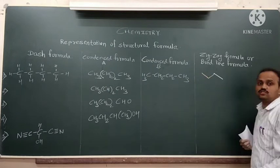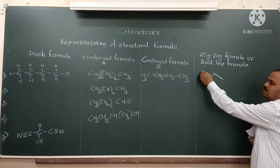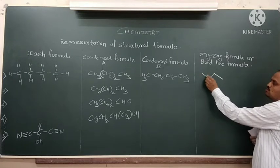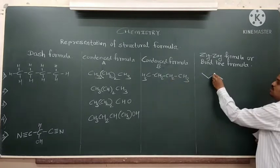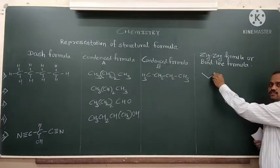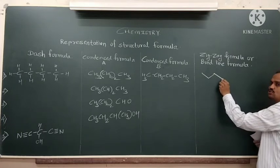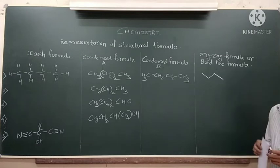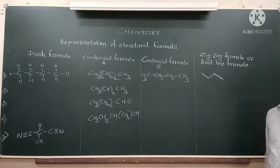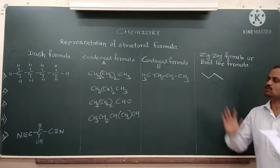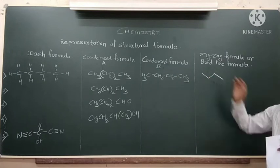One, two, three, four carbons. C, two bonds are already there. Therefore, it is CH2. C, two bonds are there. Therefore, remaining two H are there. And C, one bond is shown. Therefore, remaining are automatically three H. This is the zigzag formula or bond line formula of the compound. I hope you all have understood this type of representation of structural formula.